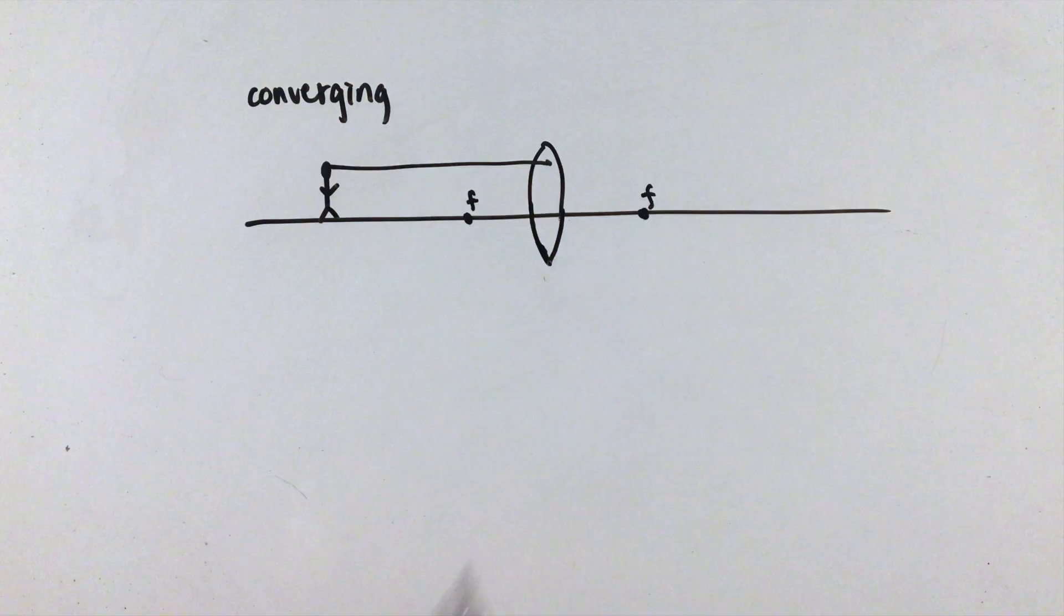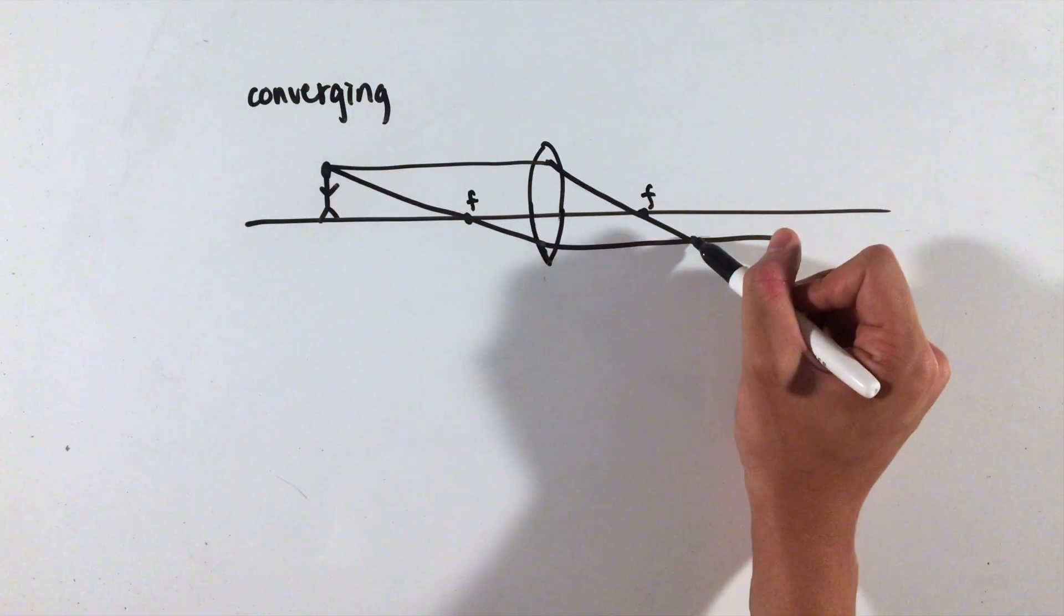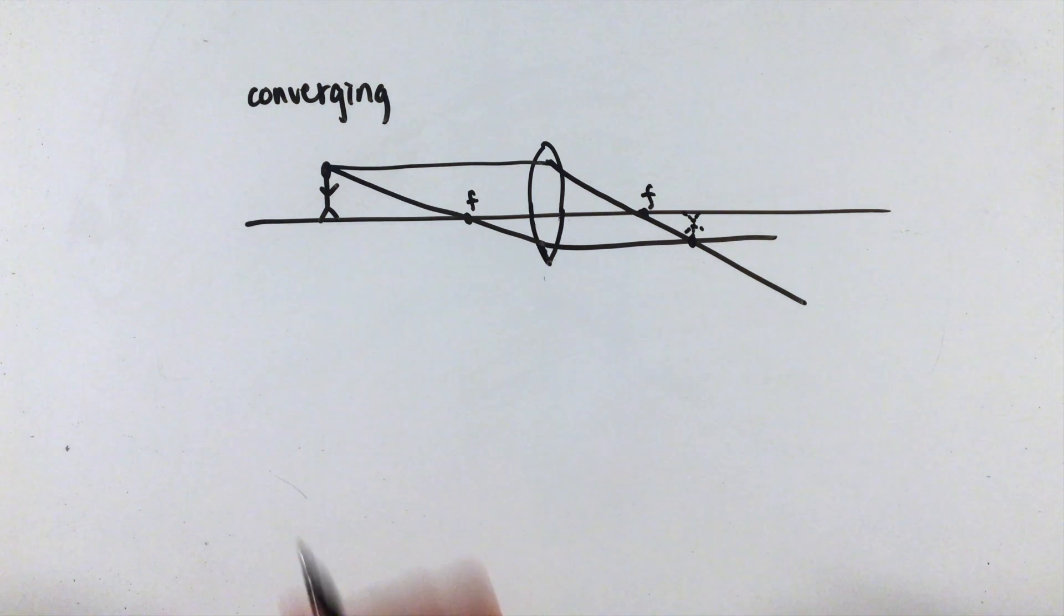For converging lenses, our first step, or a parallel line that bends to go through the focus, will go through the focus on the opposite side, as our converging lens wants to converge the light towards the center. Our step two, through the focus and coming out parallel, will use the other focus.